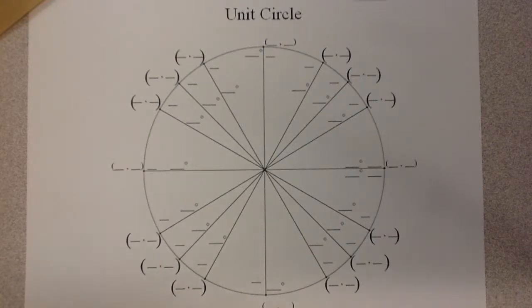So if we had a unit circle and we need to fill this in, we need to look at both filling in the degrees, the radians, and then the coordinates of the points going around the unit circle.